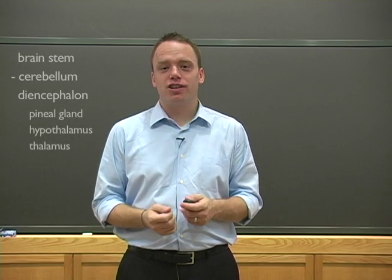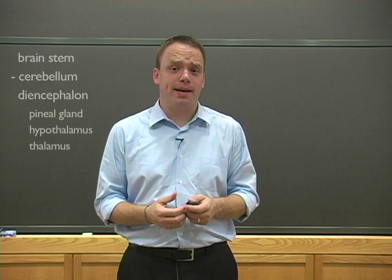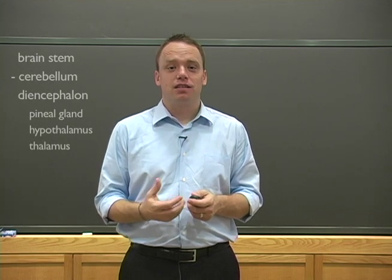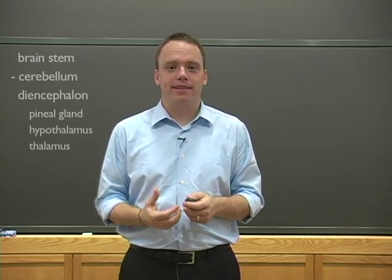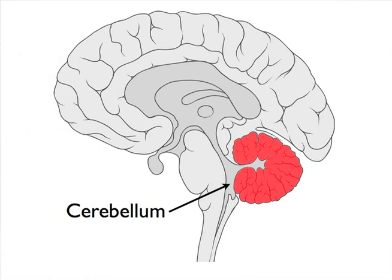The second structure, the cerebellum, lies directly behind the brain stem. Its name, literally is Latin for little brain. And it is linked to the rest of the brain and the spinal cord, with massive tracts that all run through the brain stem.